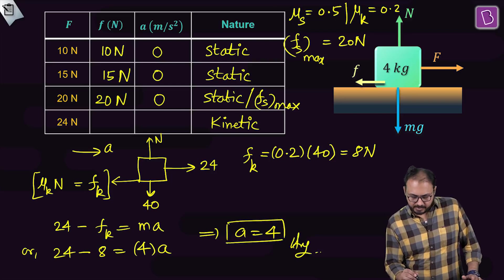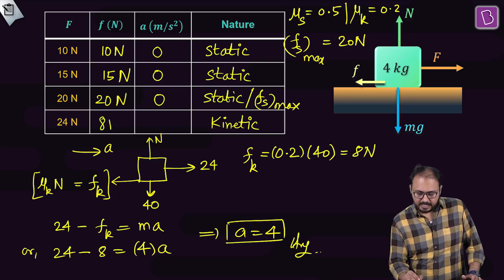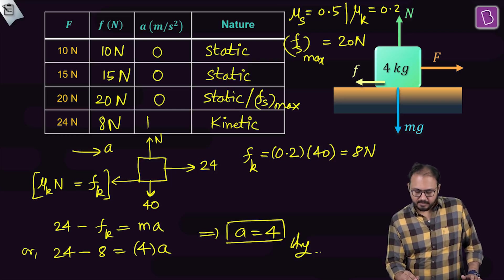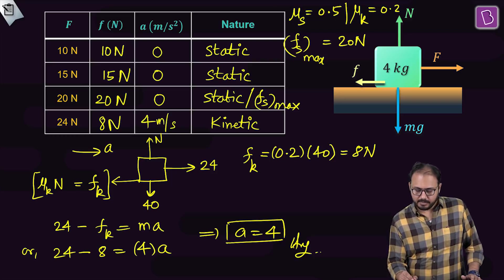So what is fk acting? fk is acting as 8 newton. And what is a? a is 4 meter per second square.